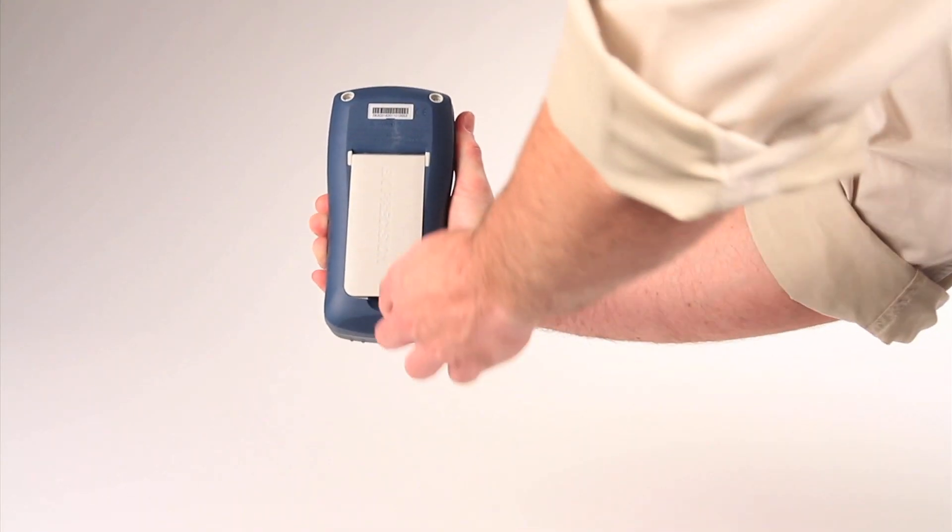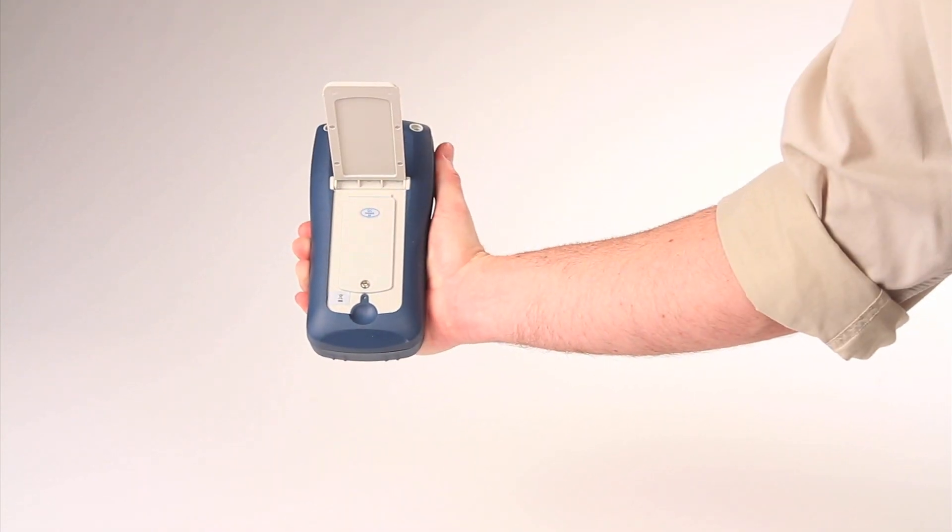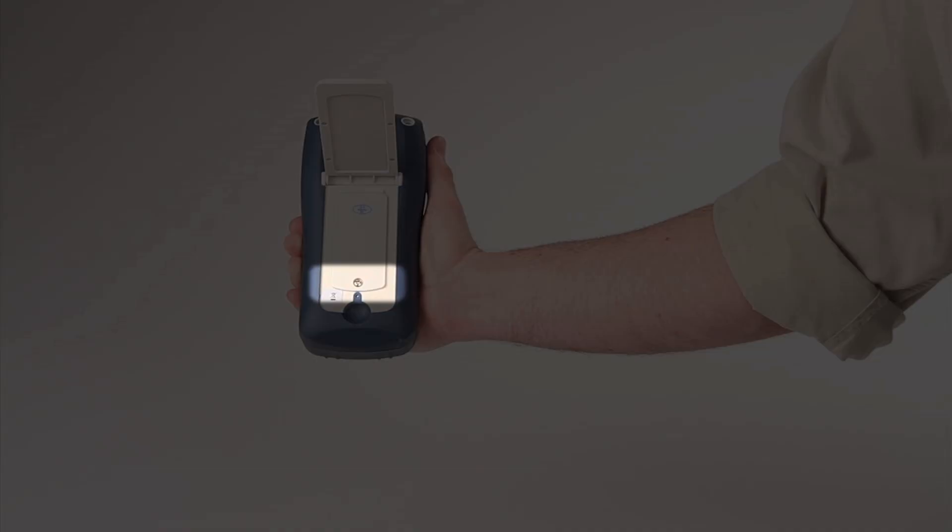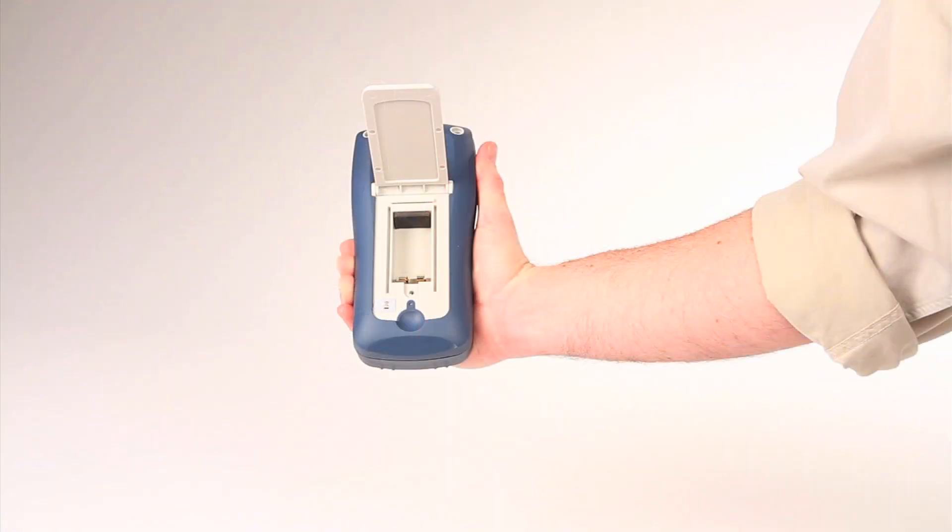On the back of the meter is the convenient tilt stand. Under the tilt stand is the battery compartment that's accessible via a single screw. Having a separate battery compartment means no calibration seal is broken just to change the battery.